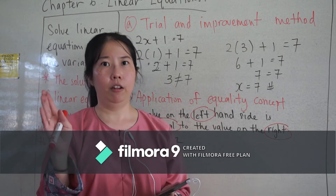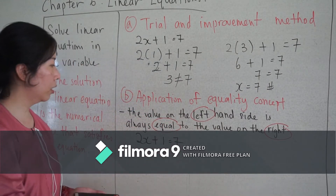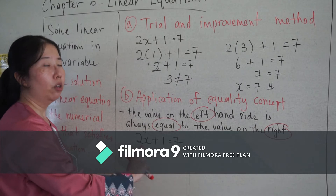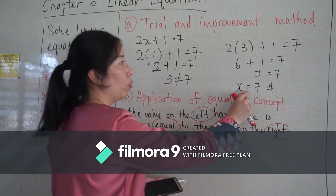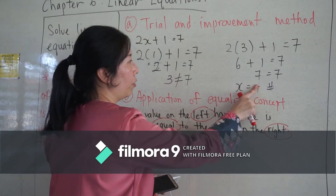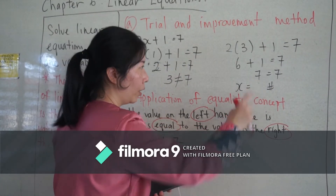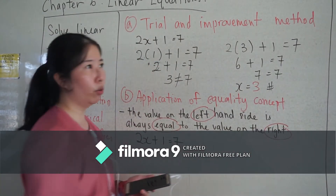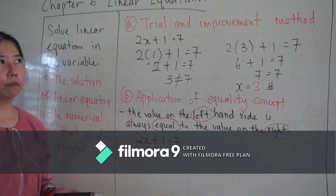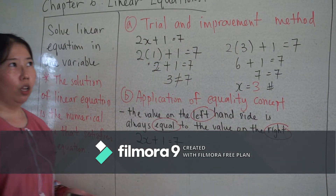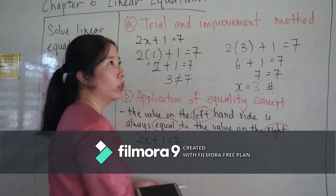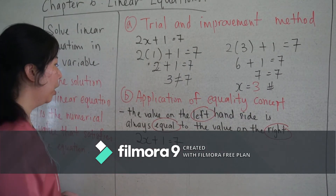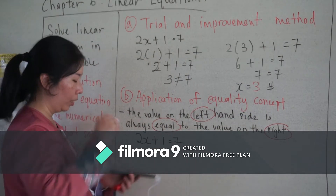Using the same linear equation two x plus one equals to seven, I expect to get x equals to three. Let me show you using the equality concept.